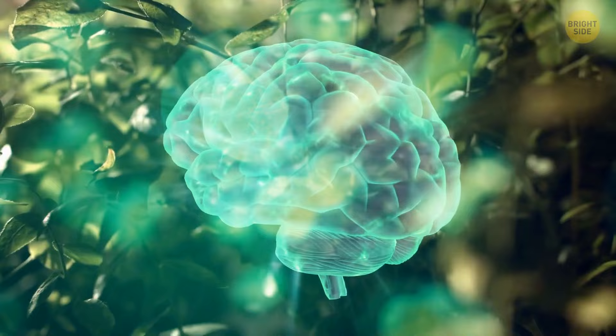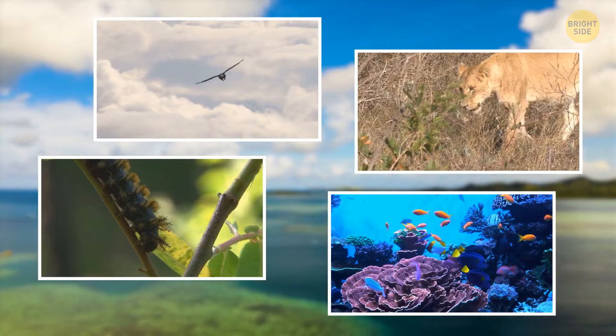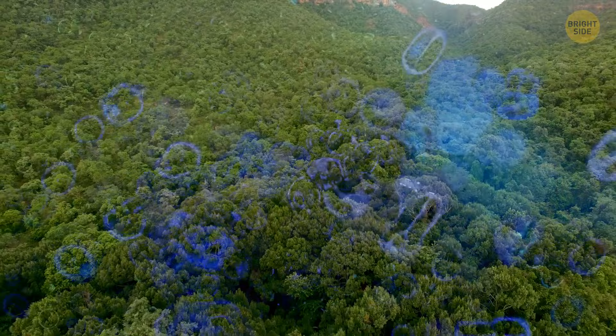Creatures across the globe crawl, swim, walk, and fly through the uppermost layers of our land, ocean, and sky. Plants cover much of our world. Plus, there are viruses and bacteria in the water, soil, and even atmosphere.